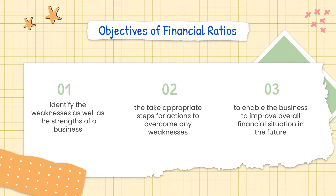The objectives of financial ratios are: first, to identify the weaknesses as well as the strengths of a business; second, to take appropriate steps and actions to overcome any weaknesses; and lastly, to enable the business to improve its overall financial situation in the future.